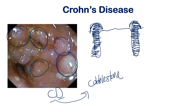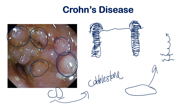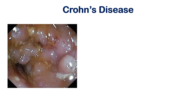To remember which disease has skip lesions, think of throwing a flat rock on a river — certain rocks have the potential to skip. When you think of cobblestone, think of those skipping stones, and that reminds you of skip lesions. So those are two tricks to help you remember the important features of Crohn's disease.